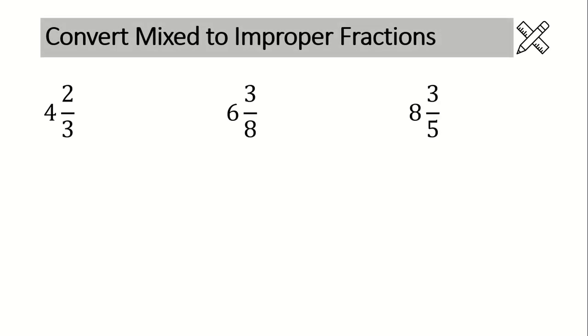When we convert mixed to improper fractions, it's important to understand that the denominator will always stay the same. Step number one is just to write in the exact same denominator that you are working with. So really, all we're looking to do is figure out the numerator on the improper fraction. Here's how you do it.